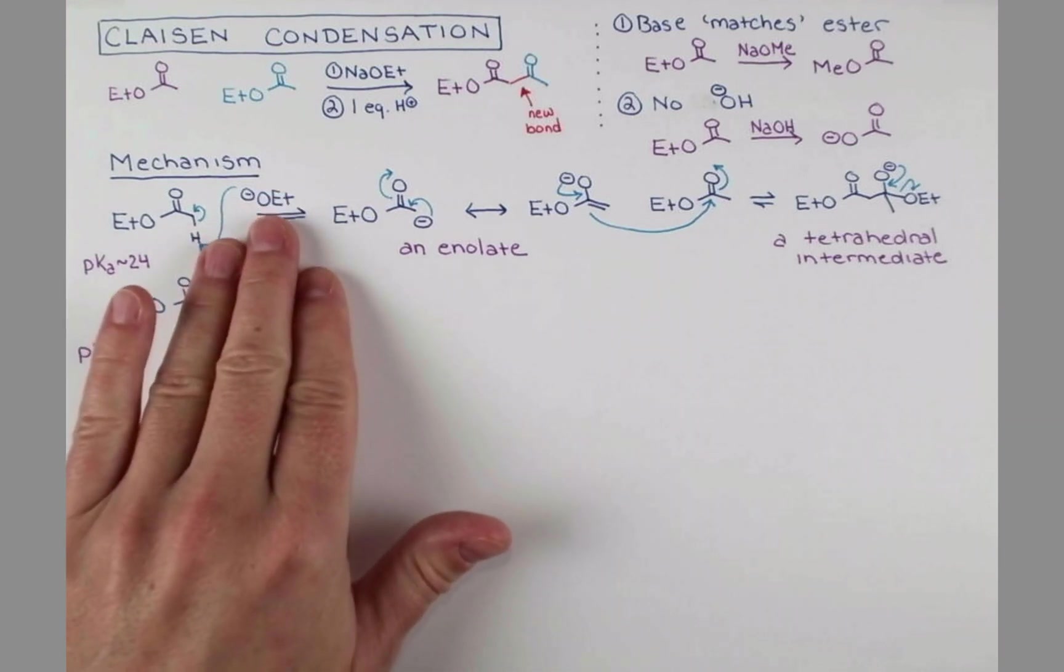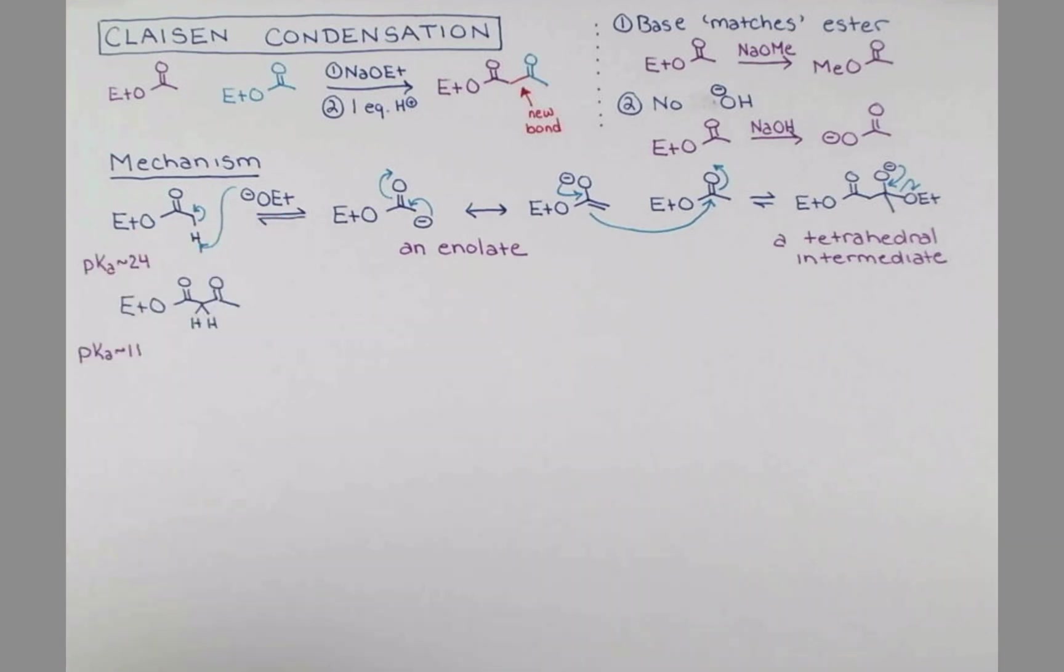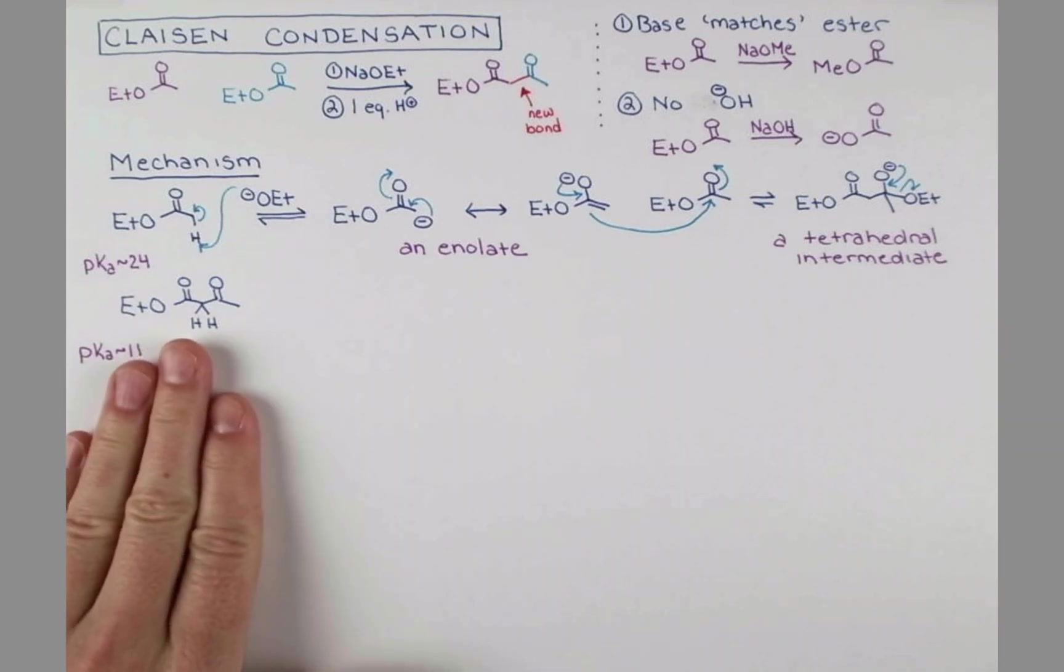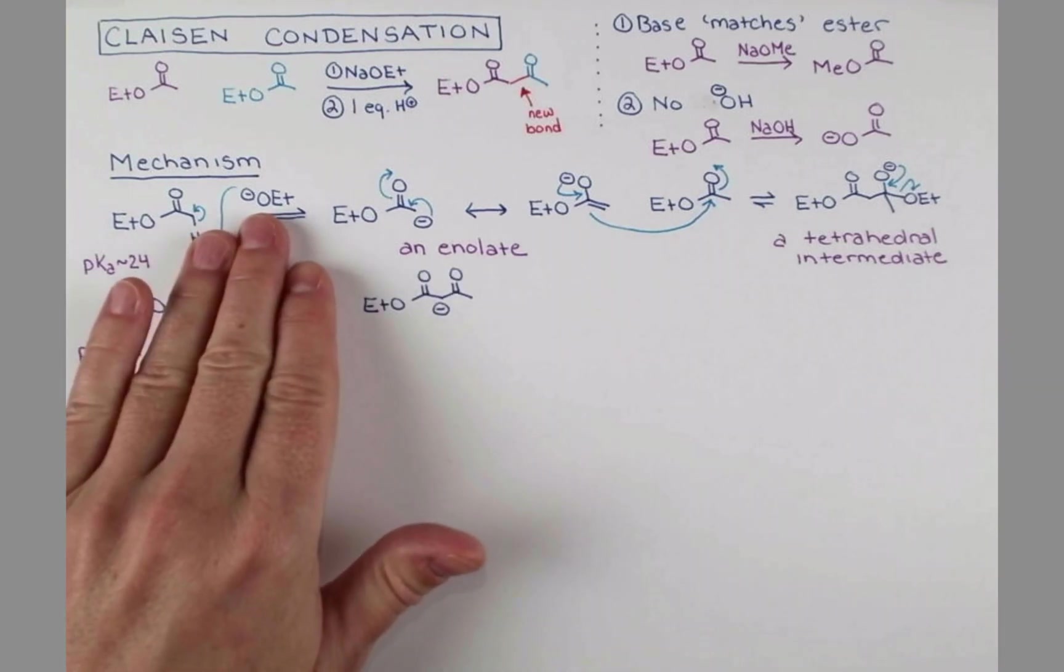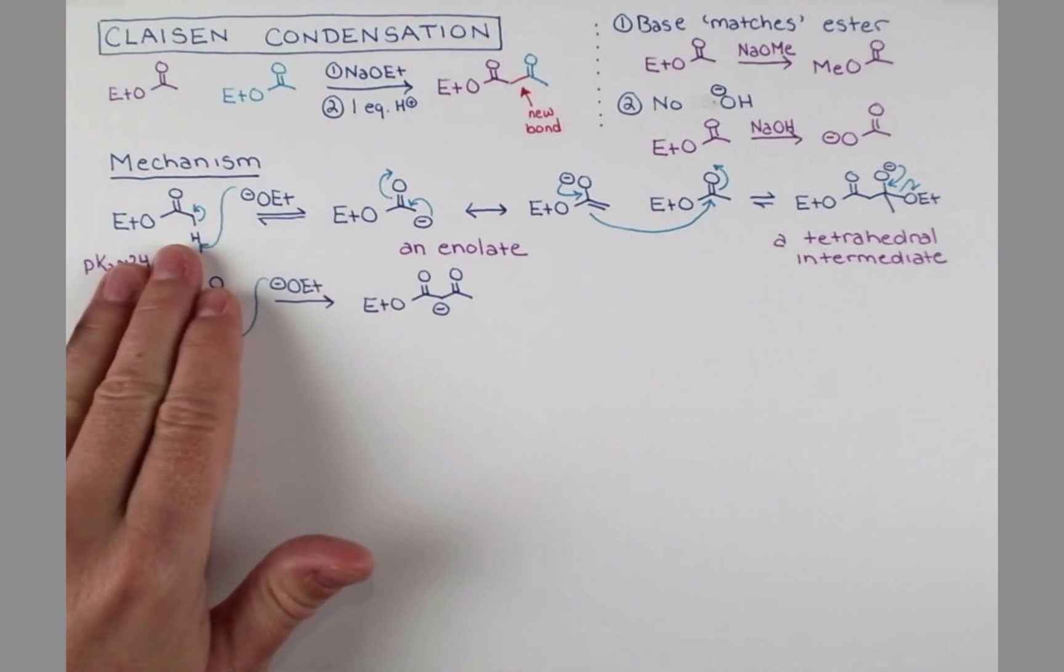The conjugate acid of ethoxide, ethanol, has a pKa of 16. So in this step, the equilibrium actually favors the full deprotonation of this compound by the ethoxide that's in solution. So in the final step of our mechanism, this proton is removed. So in this step, we use OET- to do our deprotonation.